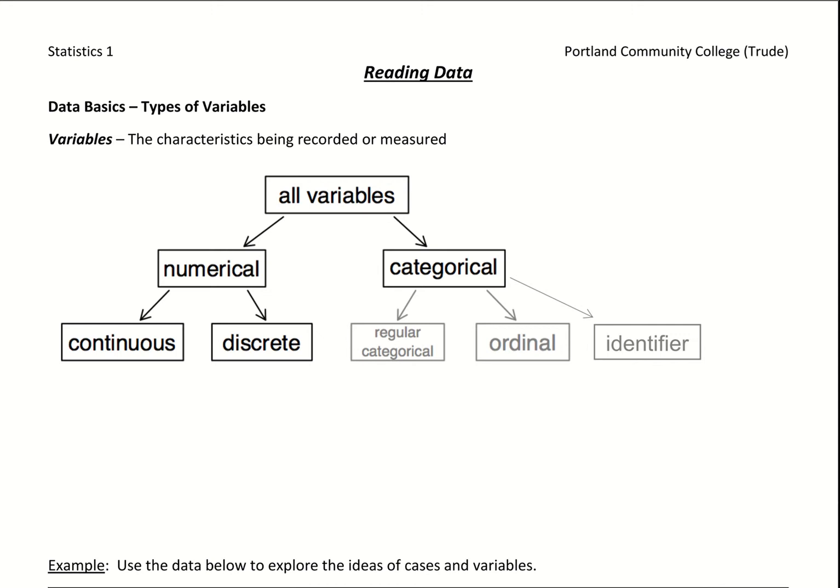When we have data we want to be able to describe the type of information that we have. So with that what we can do is describe the types of variables that we have. Now variables are the characteristics that are being recorded or measured. Typically they're about what is being surveyed. What are the questions that the researchers are asking?